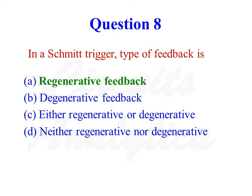In a Schmitt trigger, the type of feedback is regenerative feedback, or positive feedback. A part of the output voltage is fed to the non-inverting input of the operational amplifier. So the type of feedback is positive feedback, and the correct answer is option number 1.